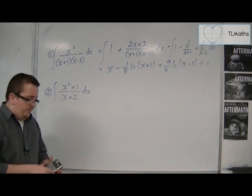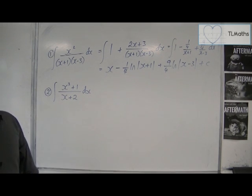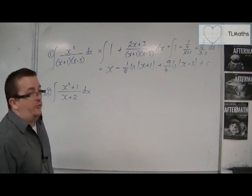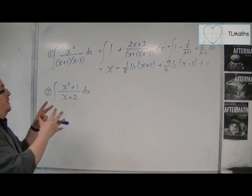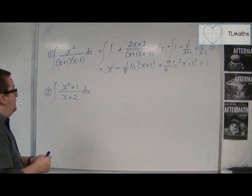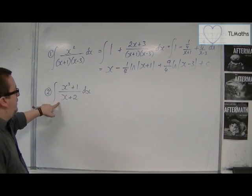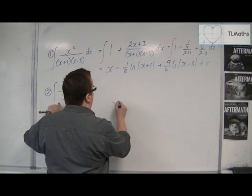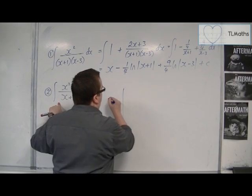Now, for number 2, we're not really going to need partial fractions, although we are kind of splitting it up into partial fractions, but we're not going to need the process so much. We're just going to do the polynomial division bit. So x cubed plus 1 divided by x+2.